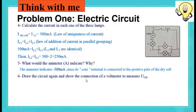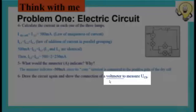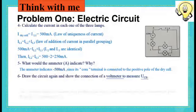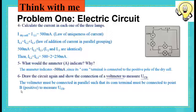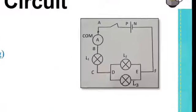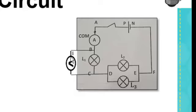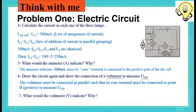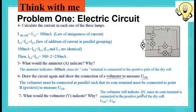We have to draw the connection of the voltmeter to measure UCB. A voltmeter must be connected in parallel. From the name UCB, C is at the V terminal and B is at the COM terminal. So the voltmeter is connected in parallel with COM towards B. The reading will be negative because COM is at B, the positive terminal, and it measures the voltage across the lamp — so it reads minus 8 volts.